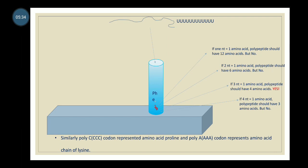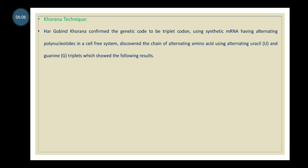Similarly, poly-C codons represented the amino acid proline, and poly-A codons coded for lysine. From this experiment using homopolymers of the four bases, they discovered some amino acid sequences and assumed that the genetic code is triplet.